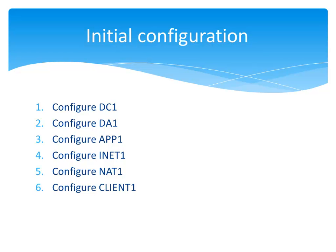The initial configuration of this test lab configures the computers in the order in which I previously described. The first three steps configure the intranet environment: DC1 being the domain controller, DA1 being the Direct Access server, and App1 being a general application server. The next two steps, four and five, have you configure iNet1 and NAT1, basically filling out the internet environment. And finally you connect Client1 to the corpnet subnet and join it to the corp.contoso.com domain.